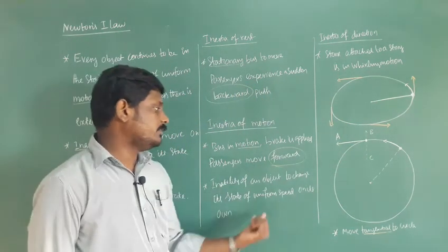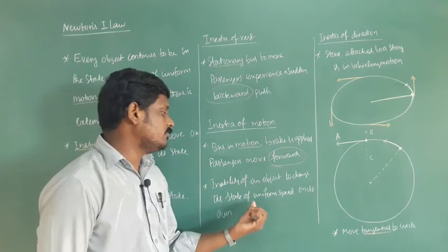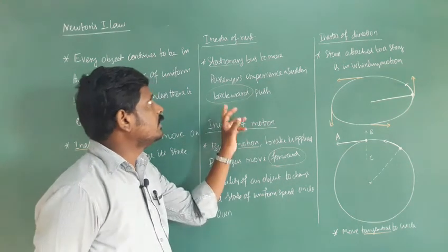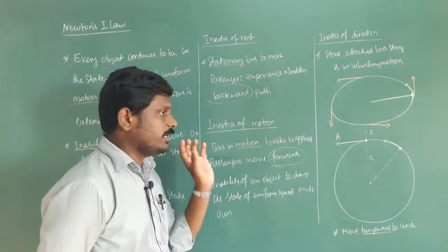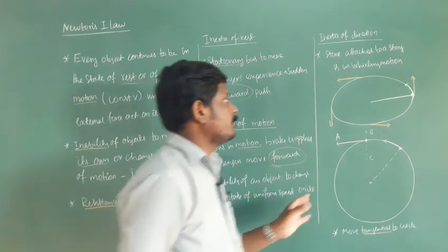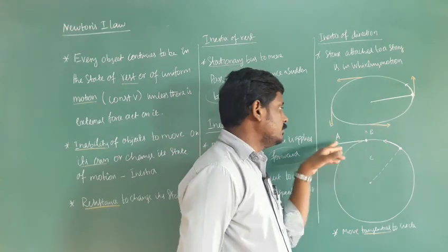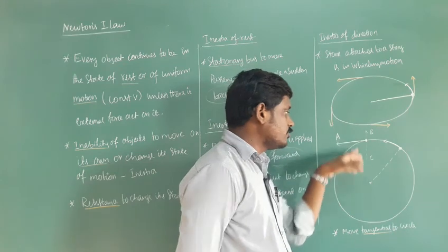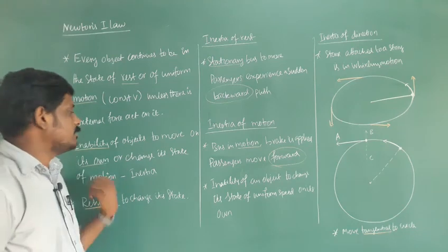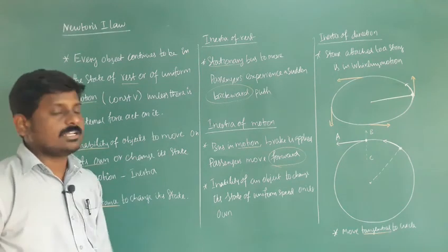To summarize: inertia of rest means an object tries to remain at rest; inertia of motion means it tries to remain in motion; and inertia of direction means it does not know how to change direction on its own — so it moves tangentially, and a force is needed to change its direction. In this class, we have discussed Newton's first law, the definition of inertia, and the three types of inertia with examples.